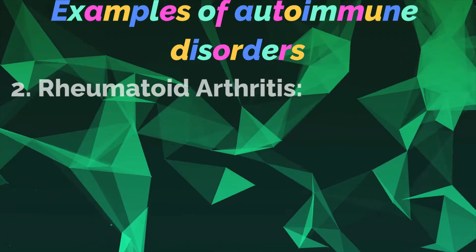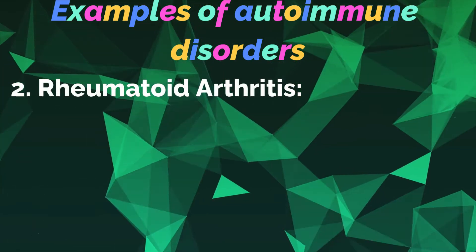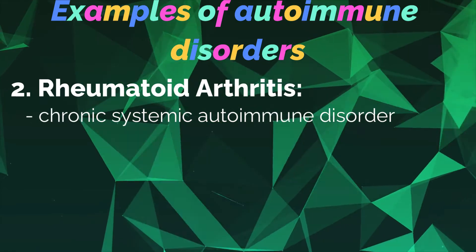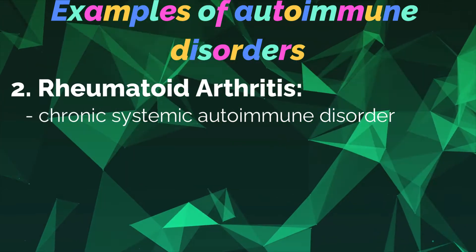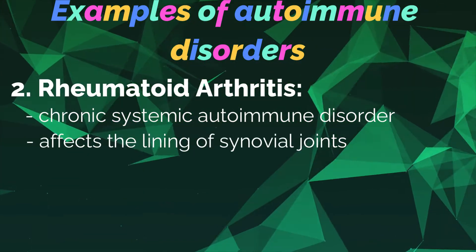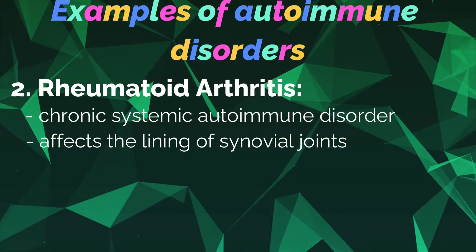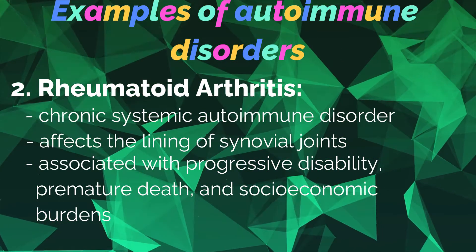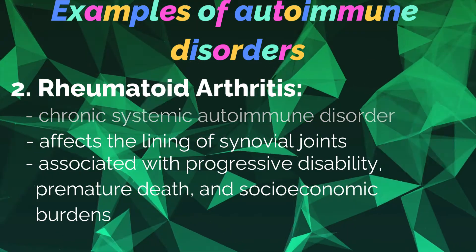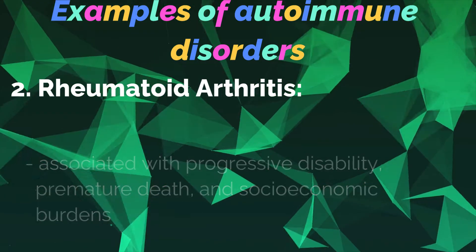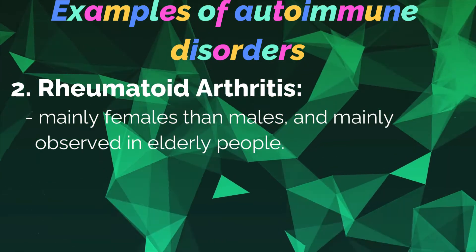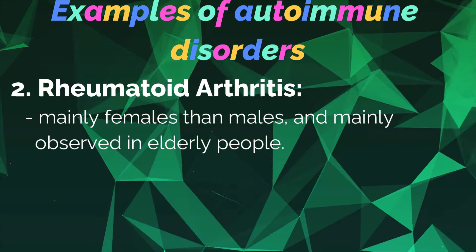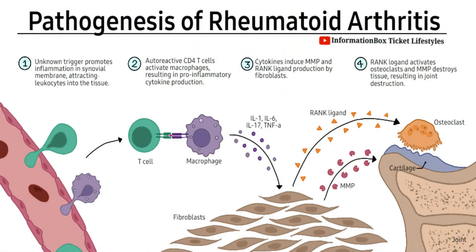Number two: Rheumatoid arthritis. It is a chronic systematic autoimmune disorder which affects the lining of synovial joints, associated with progressive disability, premature death, and socioeconomic burdens. It is mainly observed in females more than males and mainly in elderly people. The diagram shows the rheumatoid arthritis pathogenesis.